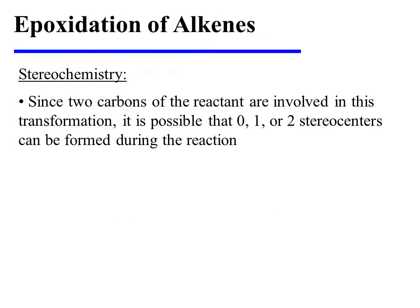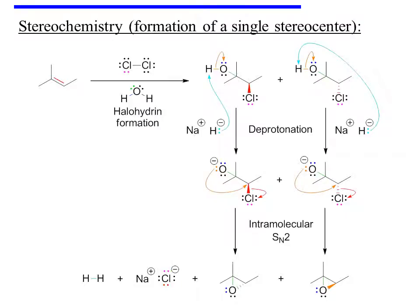Since two carbons of the reactant are involved in this transformation, it is possible that zero, one, or even two stereocenters may be formed during the reaction. Let's consider an example in which a single stereocenter is formed. An alkene reactant is first treated with chlorine in water to form a halohydrin. Notice that only one center within the halohydrin is actually a stereocenter, and so only that center has been drawn with wedges and dashes. Two enantiomeric halohydrins are formed during that first step.